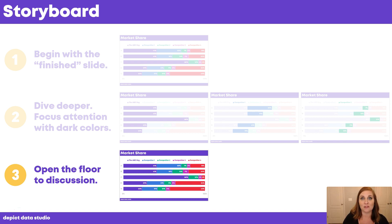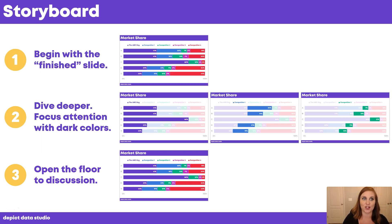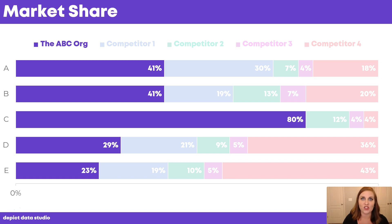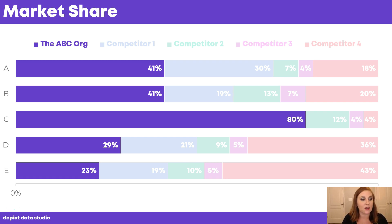Here's what storyboarding a cluttered stacked bar chart would look like in real life. You'd begin with the finished slide and say: 'Hey everybody, we're going to talk about market share and compare us to our four closest competitors. Let's dive in and look at just us — how are we doing? For Service A, we provide 41% of those services. Service B, same thing — 41%. Service C, that's where we really shine: we provide 80% of those services. That's where we have the biggest market share. And we still have a piece of Service D and E — 29% and 23%.'